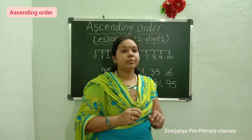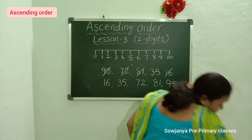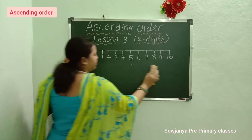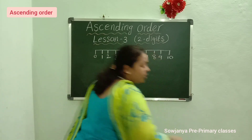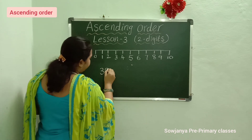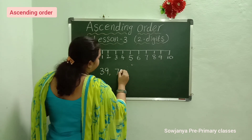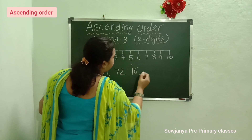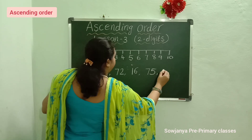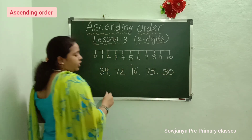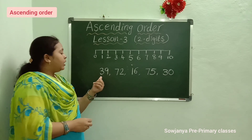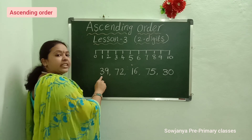We will solve one more problem. The numbers are: 39, 72, 16, 75, 30. We will do this problem the same way — we will observe the 10's place first.